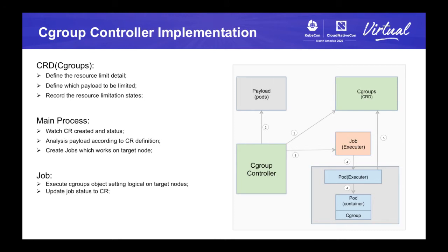Next, let's talk about the main process. The cgroup controller watches the cgroup CRDs from the API server, and if a new cgroup object is created, the controller will process it and parse the parameters. The controller will check the payload — for example, the deployment or pods — and get the target node ID and container information. The third step is the controller will create a job via the executor, which will run on the target node. The created job is configured with the target payload and limitation configuration. The job pod gets the cgroup path and the target container of the pod, then sets the limitation value to the target path file. The job pod also records the limitation setting status to the CR, indicating whether the setting is successful or failed.